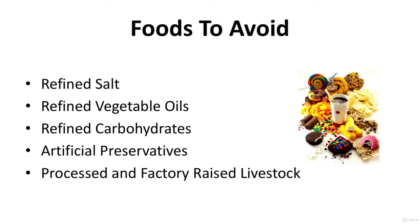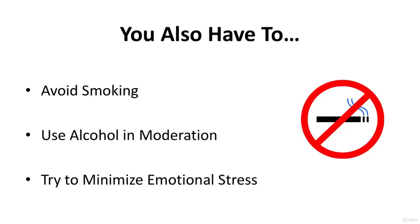The most important things to avoid are too many processed foods. Avoid refined salt; use only natural unprocessed sea, rock, or Himalayan salt. Avoid all refined vegetable oils; use only cold-pressed or centrifugally extracted coconut, palm, or olive oils. Avoid refined carbohydrates, especially white flours and products. Avoid artificial preservatives, flavorings, and colorings. Avoid processed and factory-raised livestock. Avoid smoking or other people's second-hand smoke. Avoid or use alcohol in moderation. Try to minimize emotional stress as much as possible.